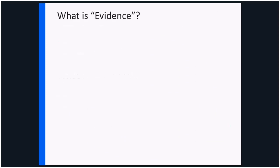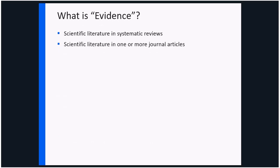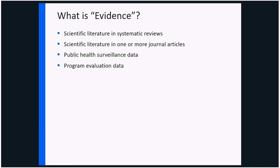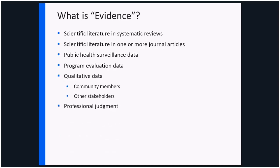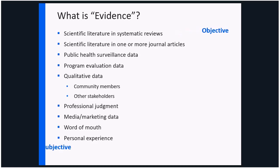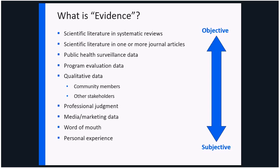If you think about the word evidence and what it really means, it can come in a lot of different forms. It can be a systematic review or a synthesis of literature. It can be a scientific article reporting on a single study. It can include quantitative data in a surveillance system, program evaluation data that's both quantitative and qualitative, qualitative data from community members, policymakers or practitioners, someone's professional judgment, data from the private sector through media or marketing, word of mouth, or one person's personal experience. All those are forms of evidence.